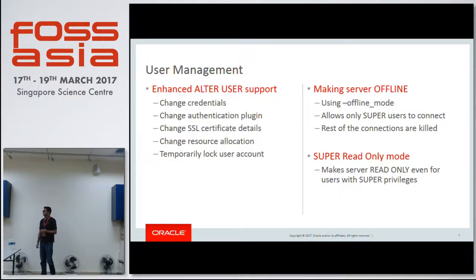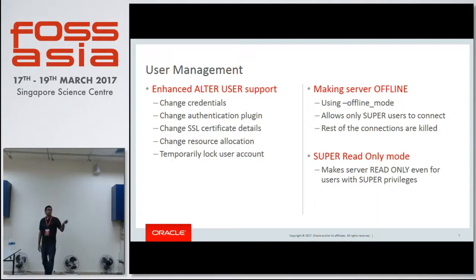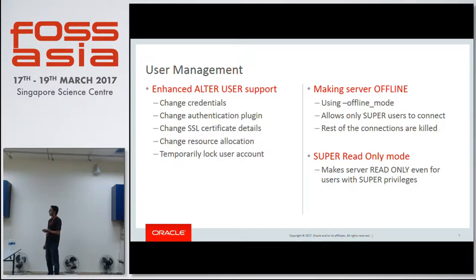The ALTER USER support is now enhanced in 5.7. Previously it used to be limited to locking the user account and password expiry. Now you can change the credential. Something which was not possible in 5.6 — you can change the authentication plugin used by the user. We support pluggable authentication, so now with ALTER USER you can change and tell the system to use another authentication plugin altogether. The certificate details associated with a user can also be changed, along with the resource allocation and temporarily locking the user account, which was also possible in 5.6.